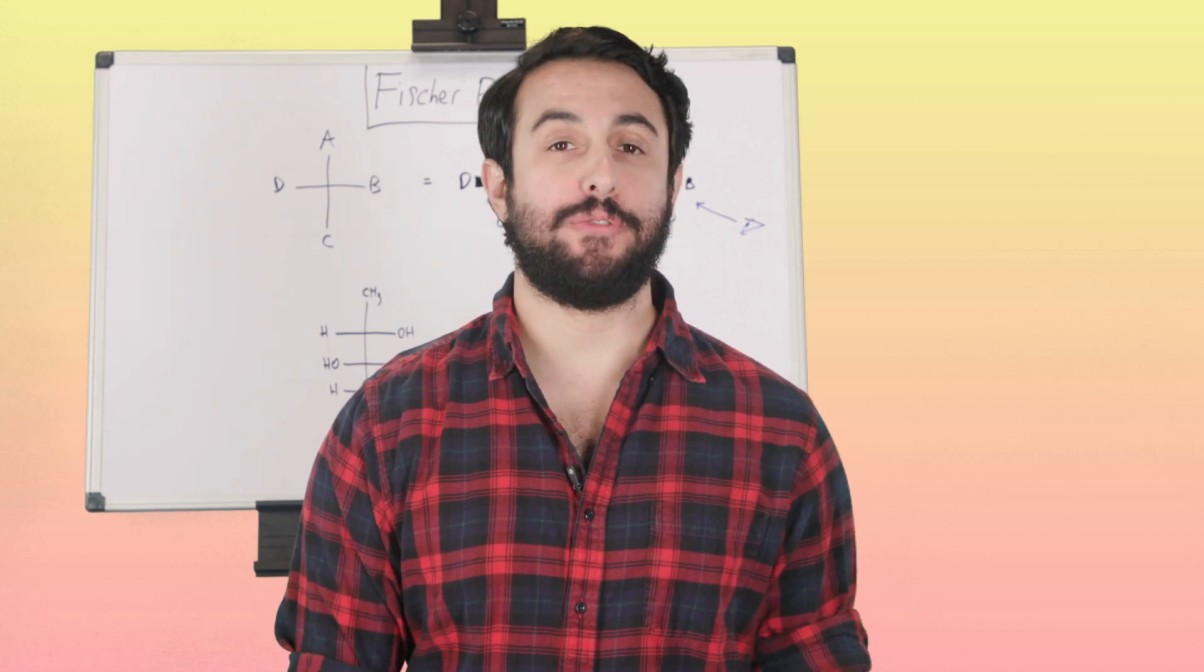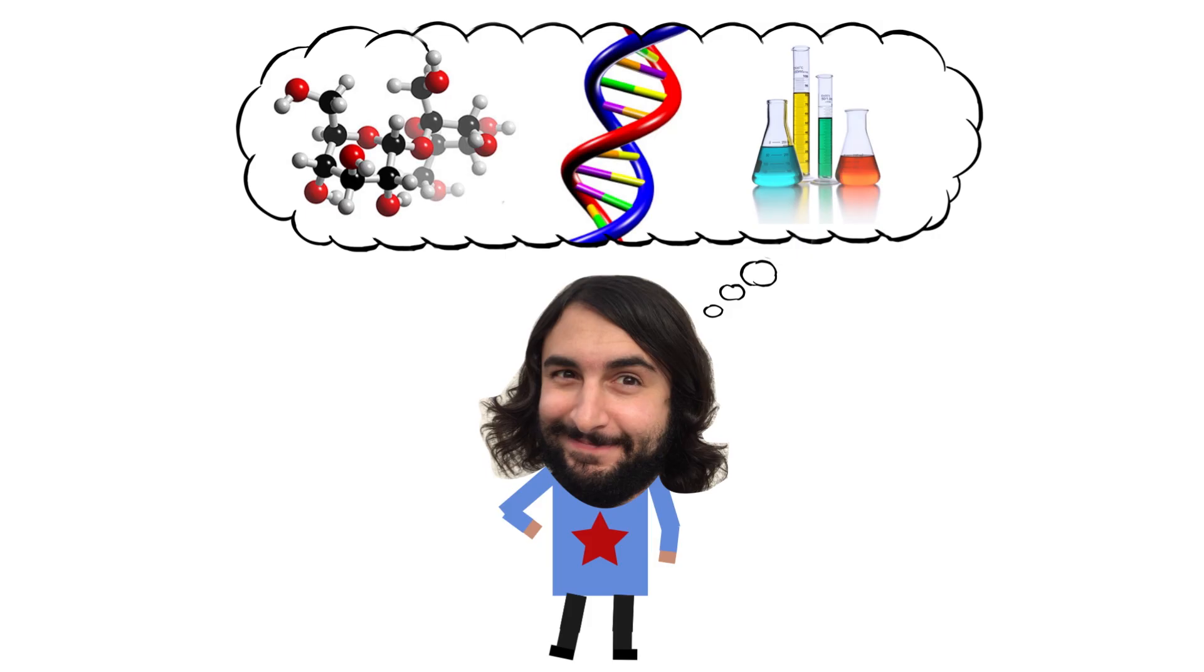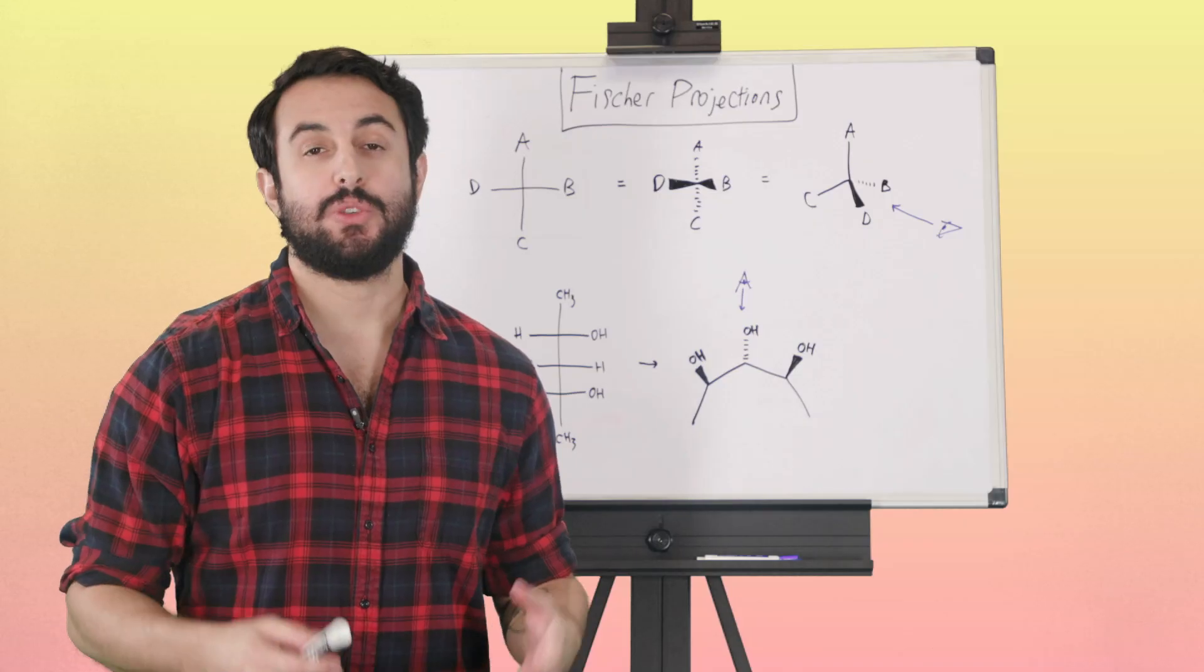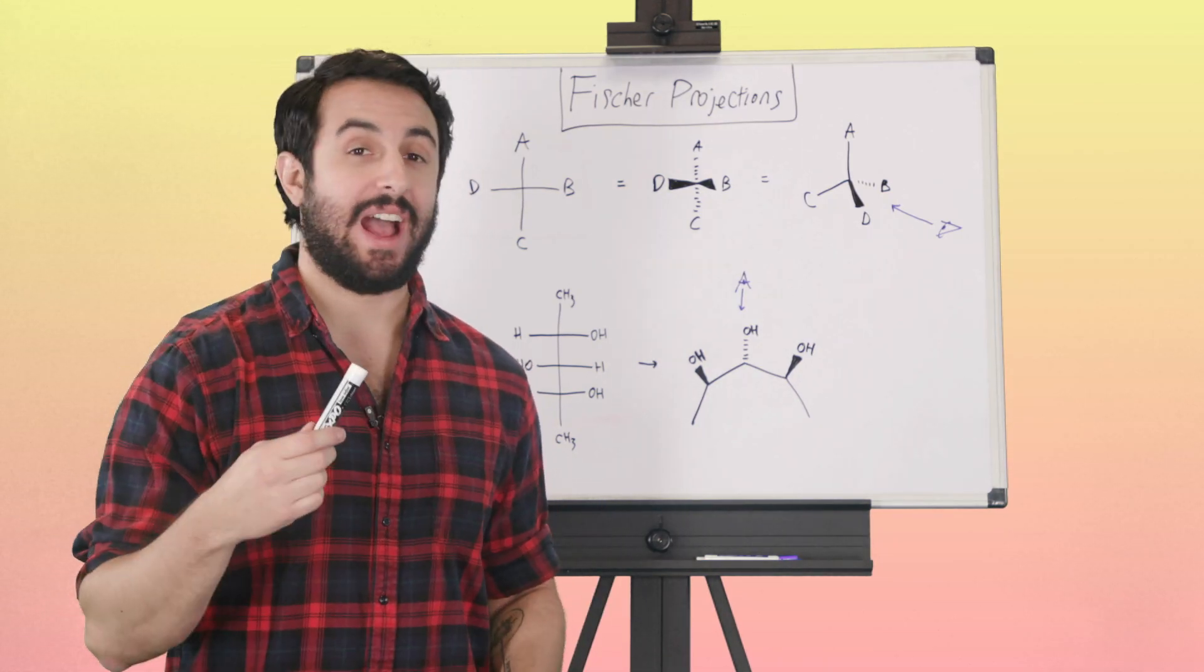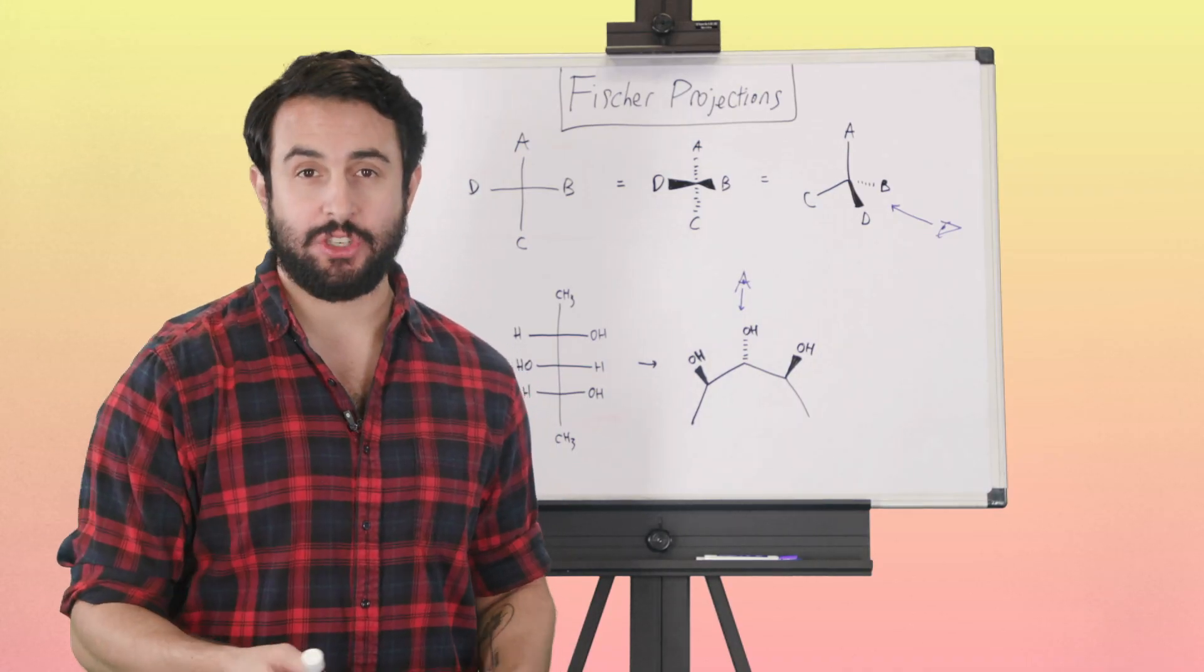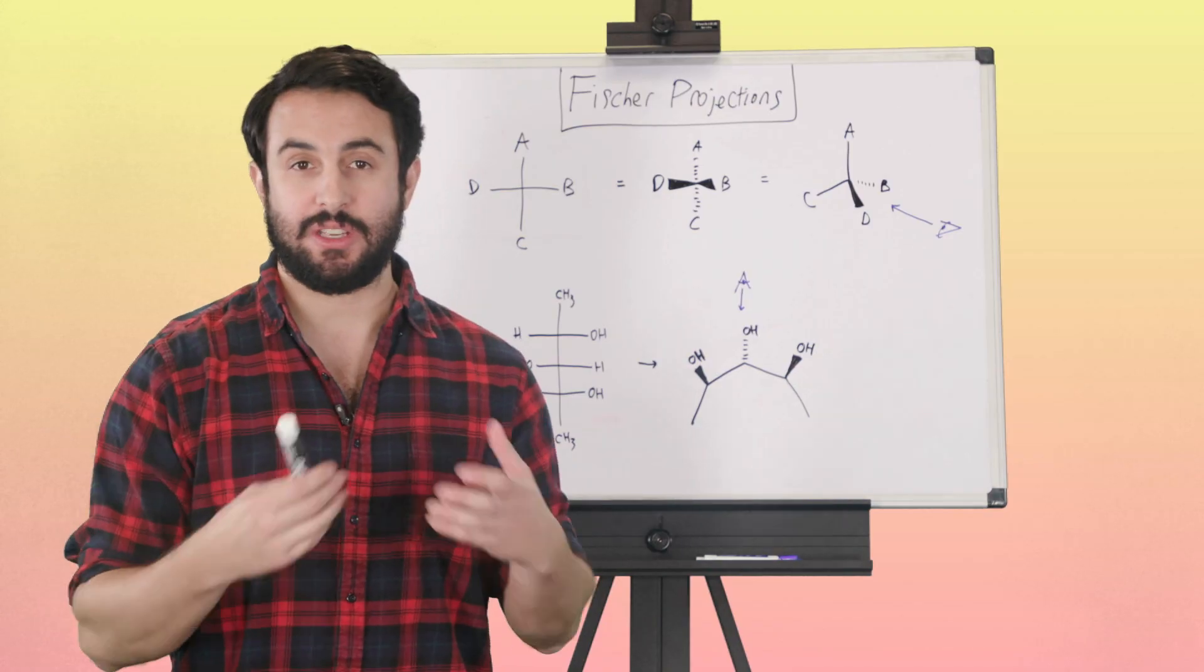It's Professor Dave. Let's talk about Fisher projections. We've covered stereochemistry and chirality, and how to assign R and S by the Cahn-Ingold-Prelog convention in previous tutorials. However, I like to do that using regular line notation.